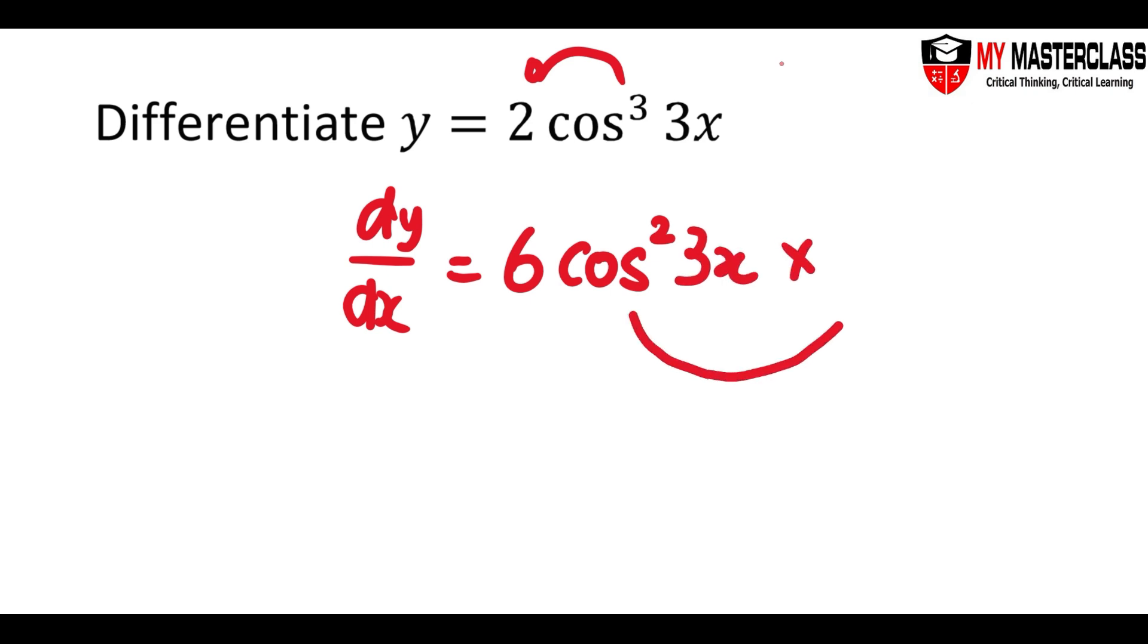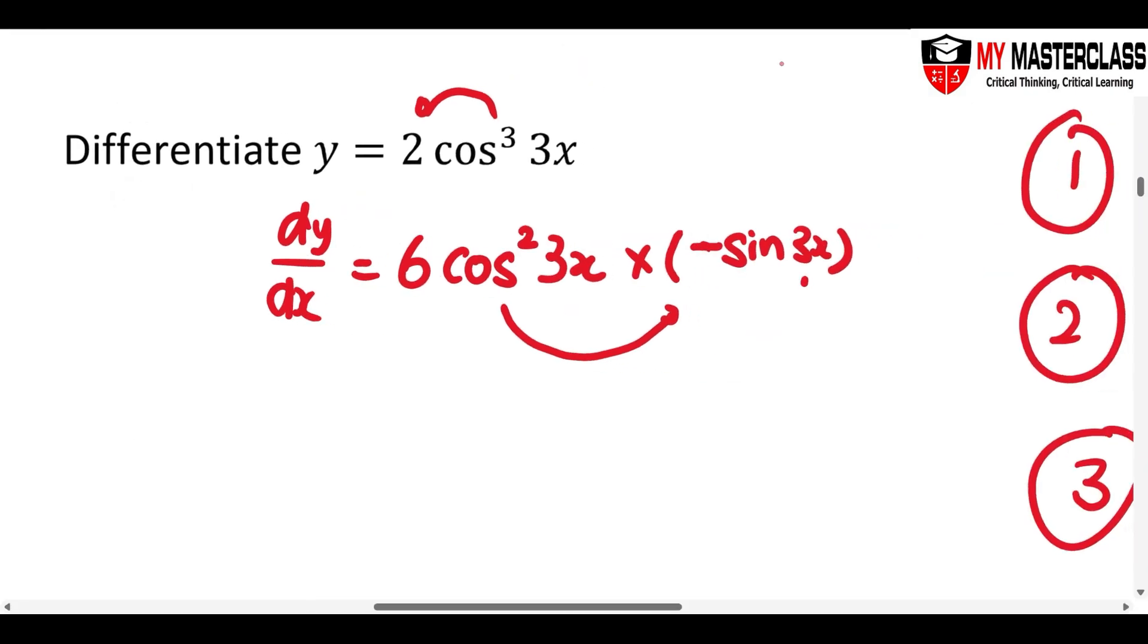Multiply by now. Now I differentiate cosine 3x. Differentiate the trigonometry is negative sine 3x. And then last part, differentiate the angle, multiply by 3. Just put everything nicely. Negative 18 cosine square 3x sine 3x. And you are done.